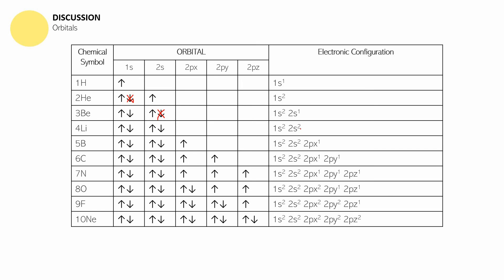An s orbital can accommodate two electrons. There is no such thing as 1s³ or 1s⁴ because an s orbital can only hold two electrons. For boron we have 1s² 2s² 2px¹. For carbon it will be 2py¹, and for nitrogen it will be 2pz¹. After filling the last p orbital, what happens next is we fulfill through oxygen one more electron in the px. So next is py², and then last is pz².